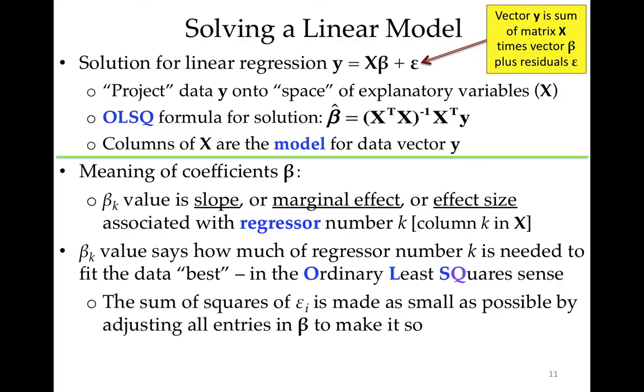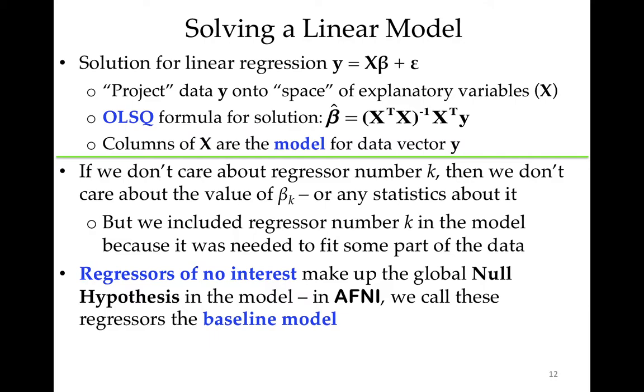Well, there's a bunch of different ways to calculate that. The most common by far is what's called ordinary least squares, which is given by this matrix vector formula here. The hat over the beta means this is a statistical approximation to the true beta. We don't know the true beta because it's corrupted by noise. Beta k says how much of regressor k is needed to fit the data best, in this case, in the ordinary least squares sense. The sum of the squares is made as small as possible by adjusting all the entries in beta to make it so. We want to make the residual small in some sense, and the sum of the squares is a reasonable way to do that.